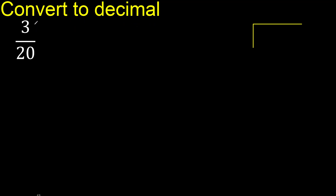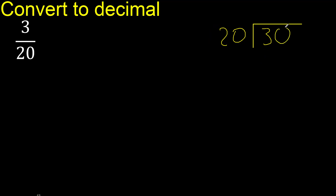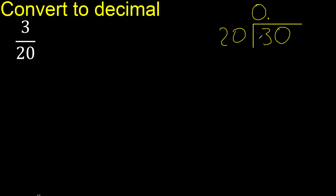3 divided by 20. 3 is less than 20, therefore we complete with 0 and place the decimal point here. Only once: 30 is not less than 20, so we proceed with 30.